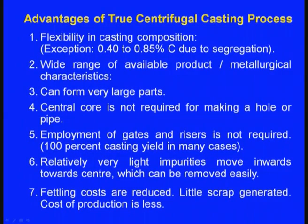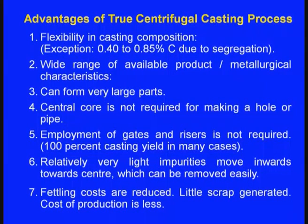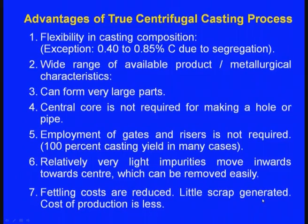Relatively light impurities move towards the centre and can be removed easily — in green sand casting, impurities remain inside, but here they segregate to the centre after solidification and can be removed by machining, brushing, or chipping. Fettling costs are reduced since there is no gating system to cut away, little scrap is generated, and cost of production is lower.